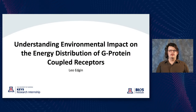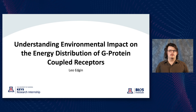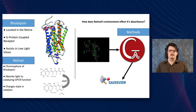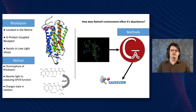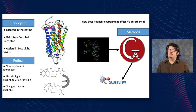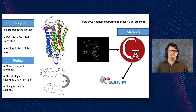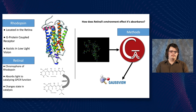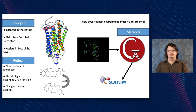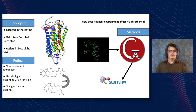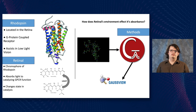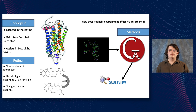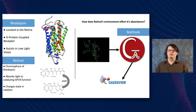Hi, my name is Leo Edgen and I worked in Dr. Michael Brown's lab this summer. Our lab studies rhodopsin, a protein located in the retina that is part of the G protein-coupled receptor family. Rhodopsin assists in low-light vision in part through its chromophore retinal, which absorbs light and catalyzes the function of the protein, changing from a dark to light state. Our question was how does the environment around retinal affect its absorbance, where environment includes surrounding residues and water.